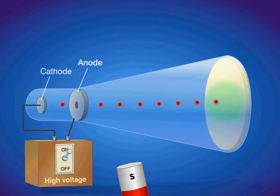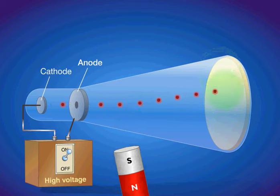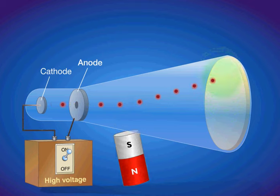A moving charged body behaves like a tiny magnet, and it can interact with an external magnetic field. The electrons are deflected by the magnetic field.